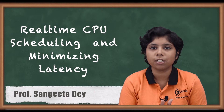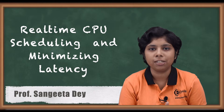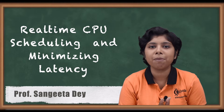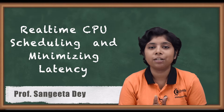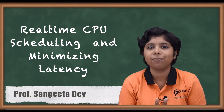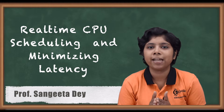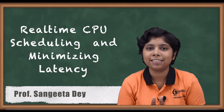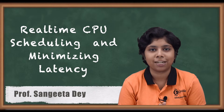The main issue concerning real-time scheduling is minimizing latency. There are two types of latency we will discuss about: interrupt latency and dispatcher latency.